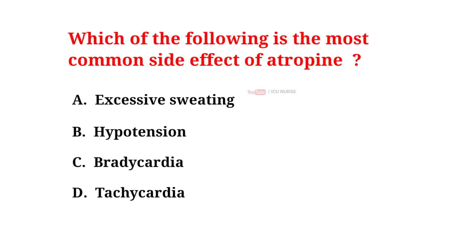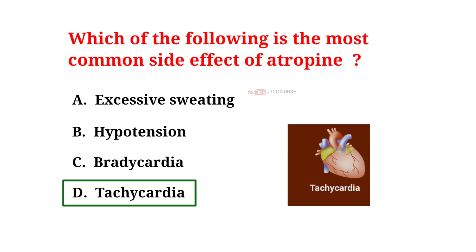Which of the following is the most common side effect of atropin? A. Excessive sweating, B. Hypotension, C. Bradycardia, D. Tachycardia. The correct answer is D. Tachycardia. Excessive sweating, hypotension and bradycardia are not side effects of atropin, whereas tachycardia is a common side effect of atropin.